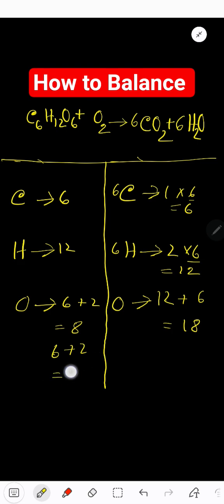To make this number 18, 6 is from here. So we have to multiply this number of oxygen by something that gives me 18. If I multiply here by 6, 6 times 2, 12 plus 6, 18.